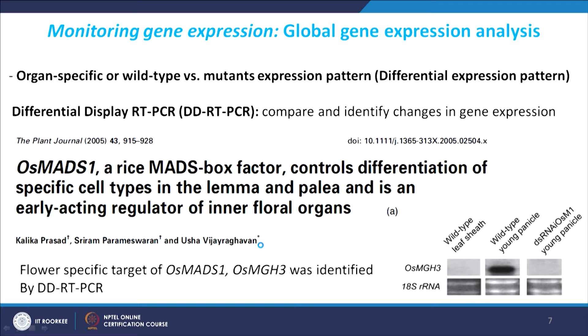This is one example where differential display RT-PCR was done. This is a MADS box-containing transcription factor in rice. What was important here is that this gene, MADS1, was expressed in the sepal equivalent — which in the case of rice is lemma and palea — but it was not expressed in the inner organs. However, when the gene was mutated or silenced, the effect was also seen in the inner floral organs, for example lodicules and stamens.